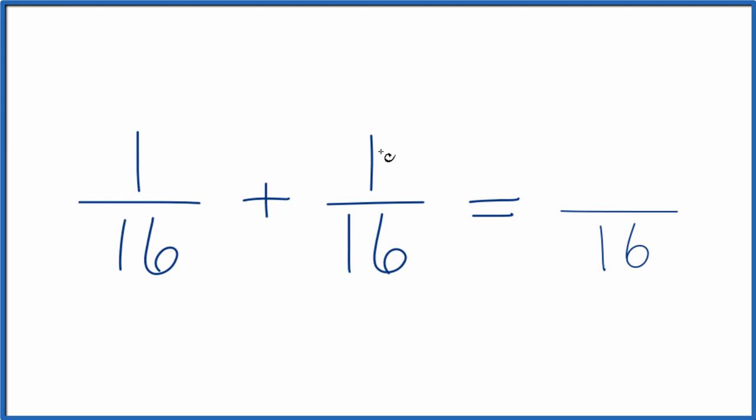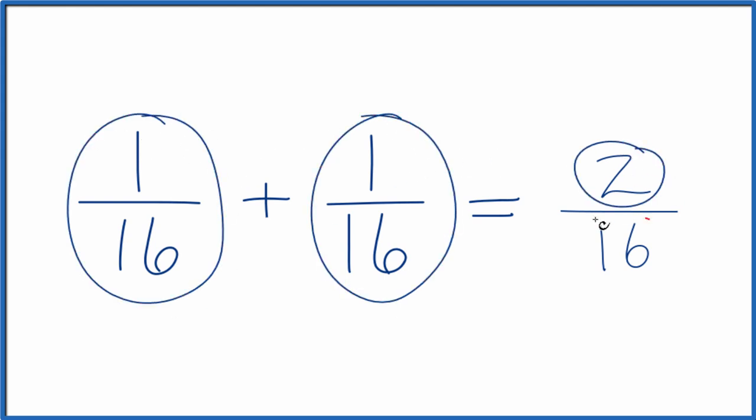For the numerator, we then just add the numerator. 1 plus 1 is 2, so we end up with 2/16. And that's not surprising. We have 1/16 here plus 1/16. We get 2/16.